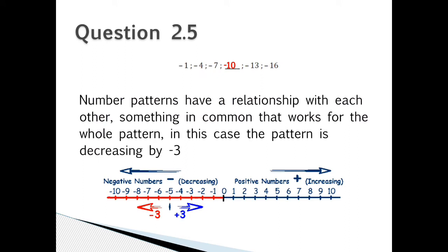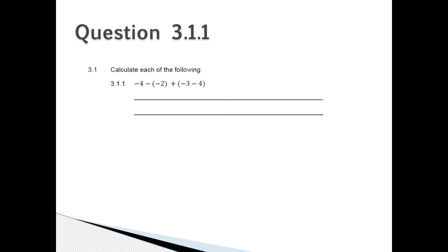Question 2.5: Remember that number patterns have a relationship with each other, something in common that works for the whole pattern. In this case the pattern is decreasing by negative 3. So therefore the missing number is negative 10.